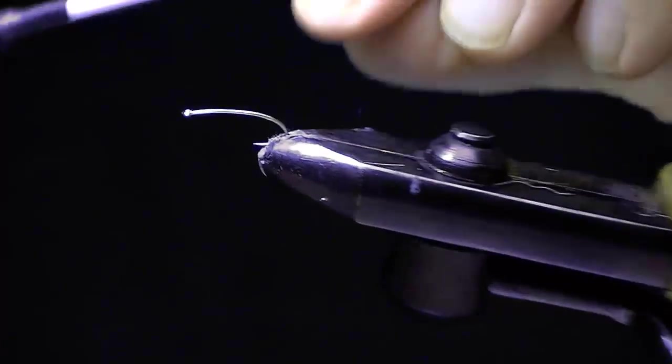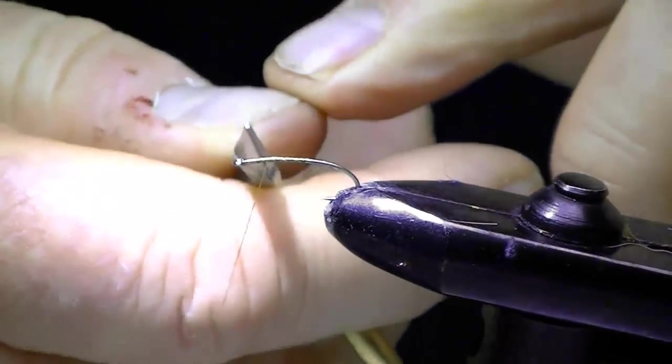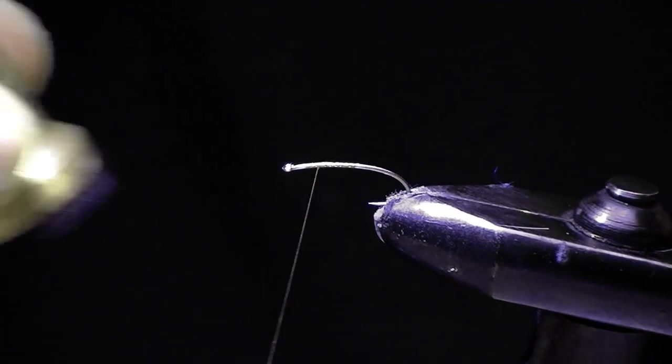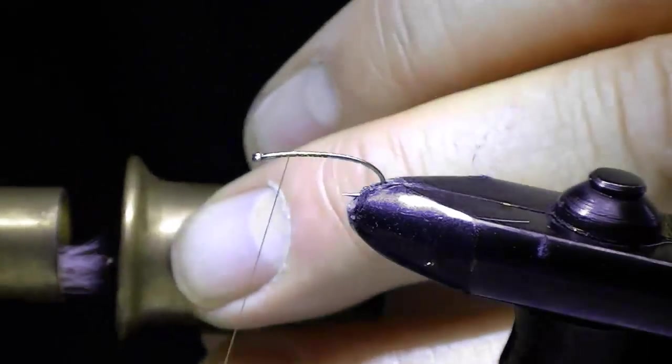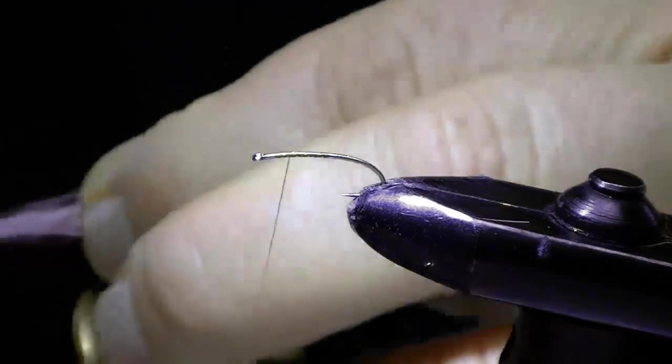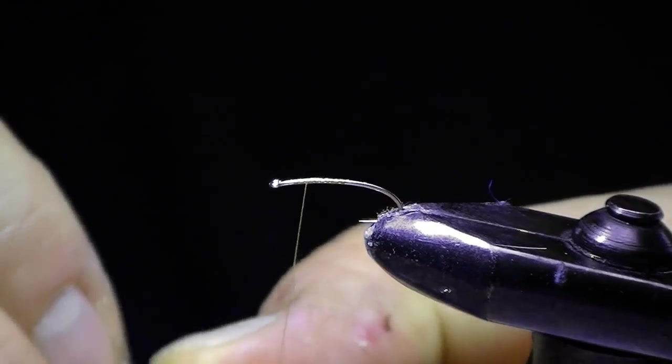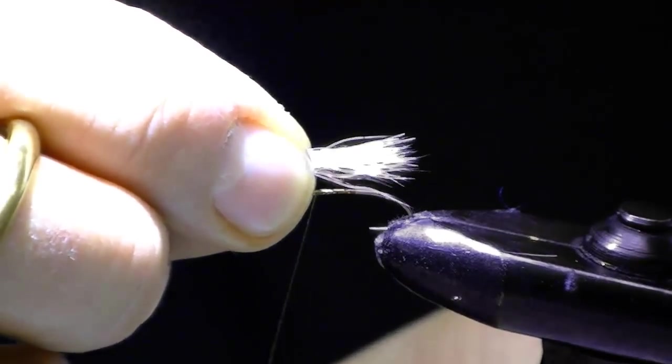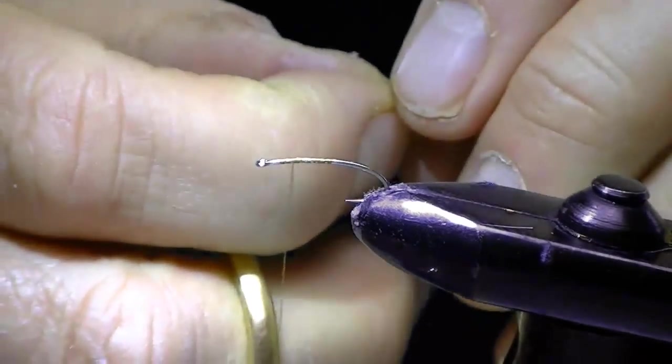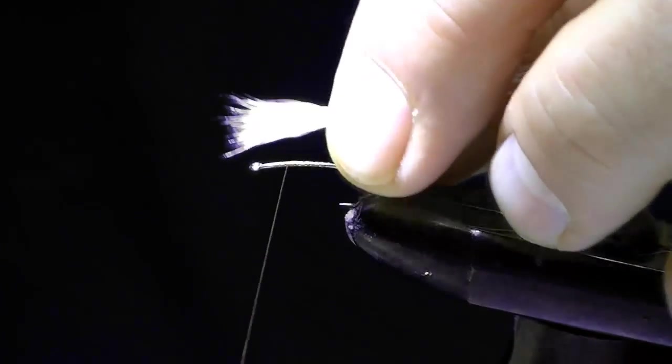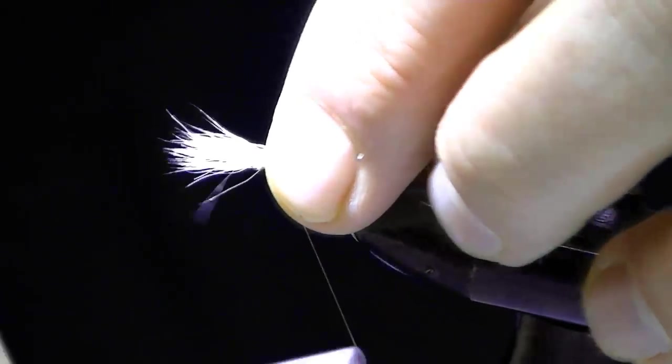So you start out with your hook in the vise. This is a size 14 I believe. Go ahead and put a base of thread on. Go down about 25%. I've already stacked a little calf body hair here. Let's see how it works. I'll pull this out. And I want this wing about the length of the shank of the hook. So I measure that. Then I go ahead and I tie it in.